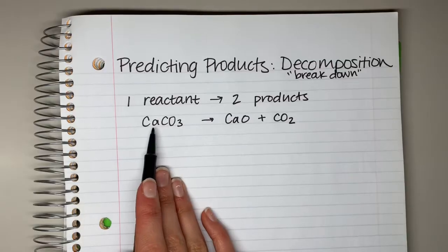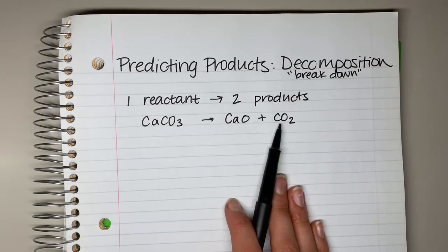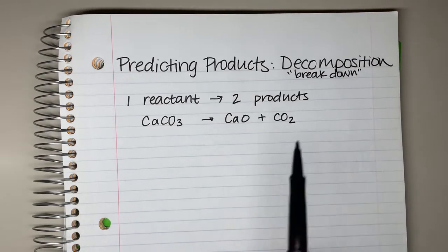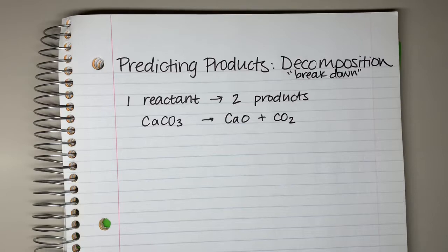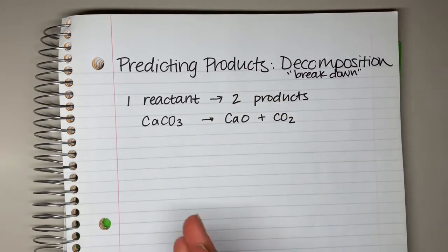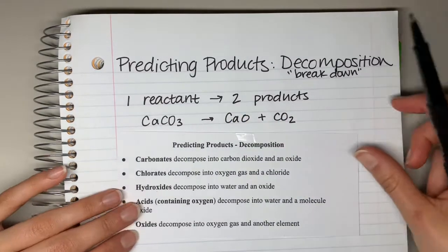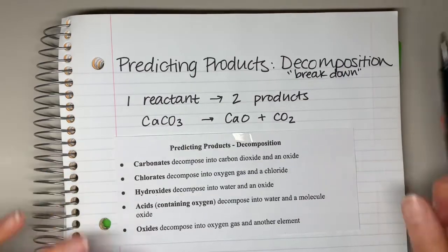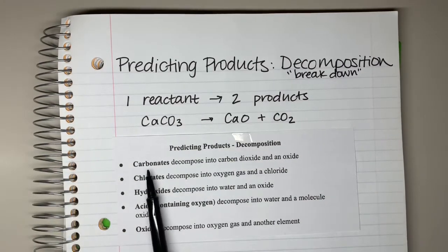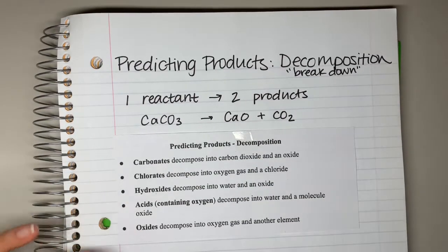So we started with one reactant, and for this class we are always going to have it break down into two products. It's very obvious when you have a decomposition reaction because there is one reactant. To help you, because this isn't always an obvious breakdown, you have on your reference sheet something that tells you exactly how to break down specific compounds.